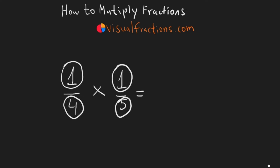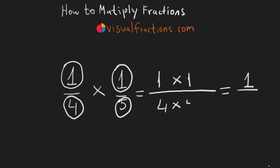To multiply fractions, you simply multiply the numerators together and then the denominators together. Multiply 1 by 1, which equals 1, and then multiply 4 by 5, which equals 20.